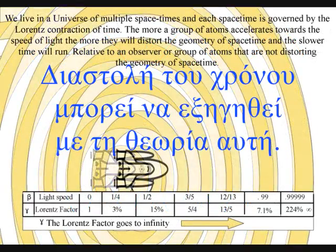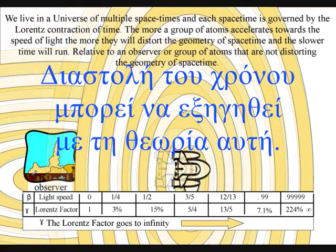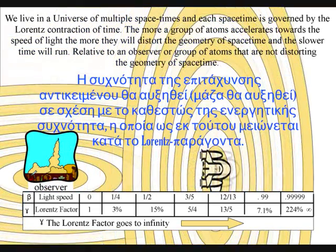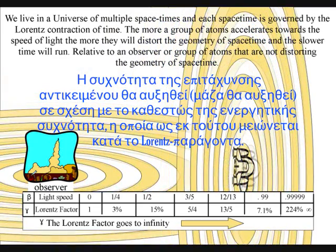We have time dilation for an object accelerating towards the speed of light, and gravitational time dilation around objects of great mass, because the greater the momentum, the shorter the wavelength, and the higher the frequency.